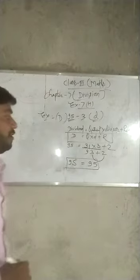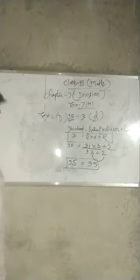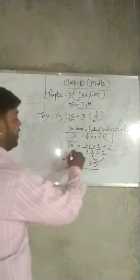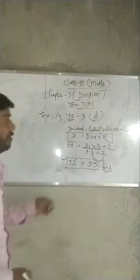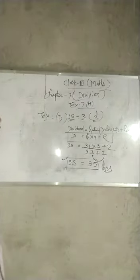And 95, both are equal. It means our answer is correct. So we will verify like this, the answer. Our answer is correct. I hope you understand. I will solve one more example.